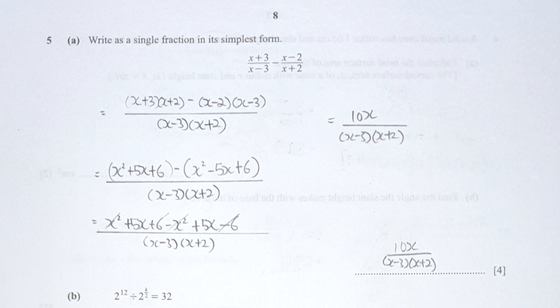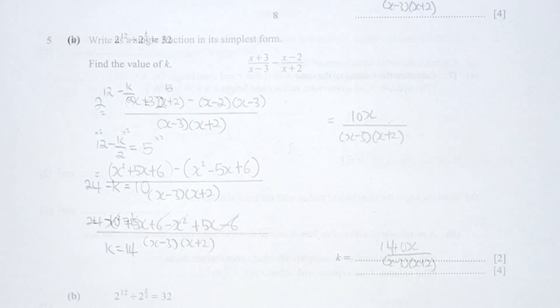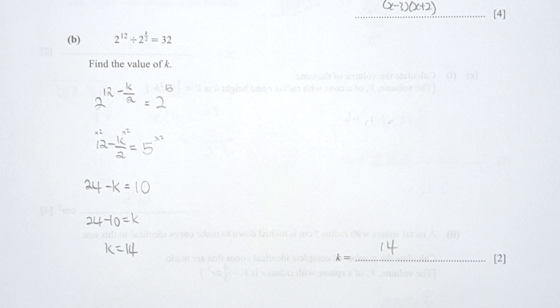For part b, since they have the same base, 2 to the power of 12 divided by 2 to the power of k over 2, I combine them as 2 to the power of (12 − k/2). For 32, it's actually 2 to the power of 5. Now all bases are the same, I compare the powers: 12 − k/2 equals 5, and from my calculation I get k as 14.